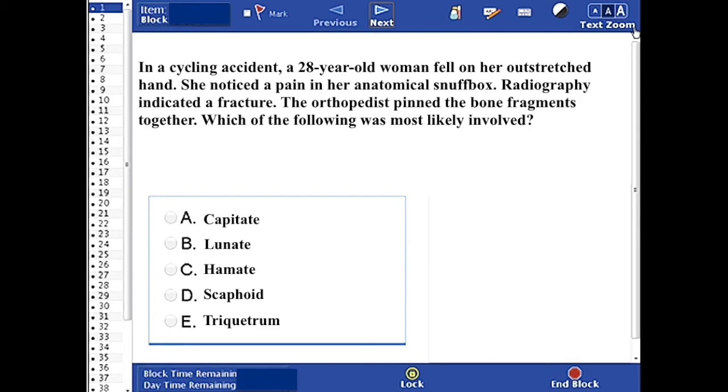Following a cycling accident in which a 28-year-old woman fell on her outstretched hand, she noticed a pain in her anatomical snuffbox. Radiography indicated a fracture. The orthopedist pinned the bone fragments together. Which bone was most likely involved?